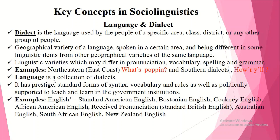In contrast, language is a collection of dialects. It has prestige standard forms of syntax, vocabulary, and rules, and is politically supported to teach and learn in government institutions. Examples in English include Standard American English, Cockney English, African American English, Received Pronunciation or Standard British English, Australian English, New Zealand English, and South African English.